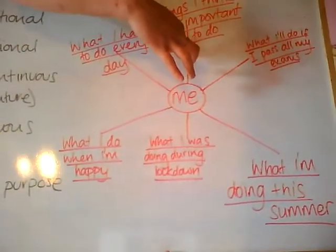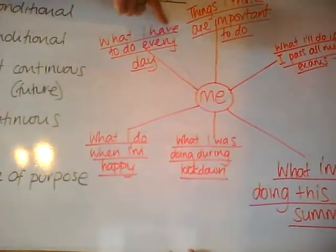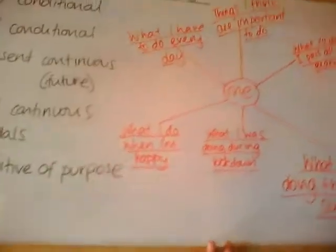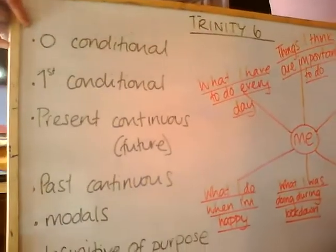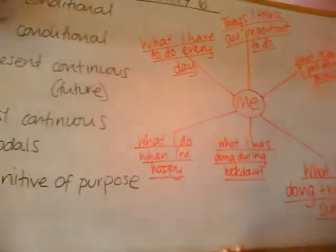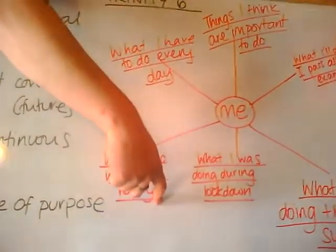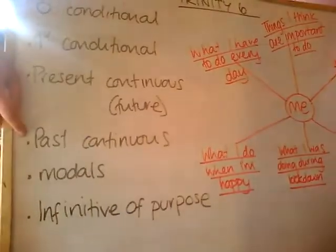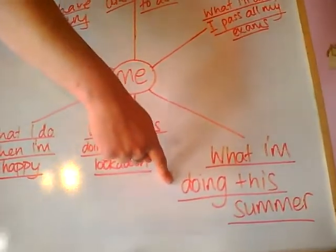And finally, things I think are important to do. So first, as in Trinity 5, can we match each of these parts to one of the language requirements? Let's start with 'what I have to do every day' — this one goes with modals. Remember, the modals: have to, don't have to, might. 'What I do when I'm happy' is zero conditional: when I'm happy I dance a lot, when I'm happy I am nice to people. Remember, zero conditional: when or if plus the present, and the present in the second part as well.